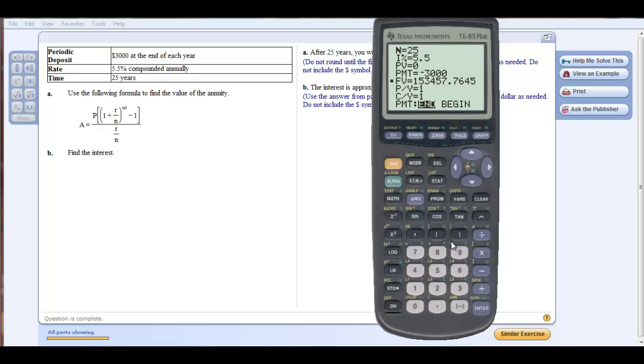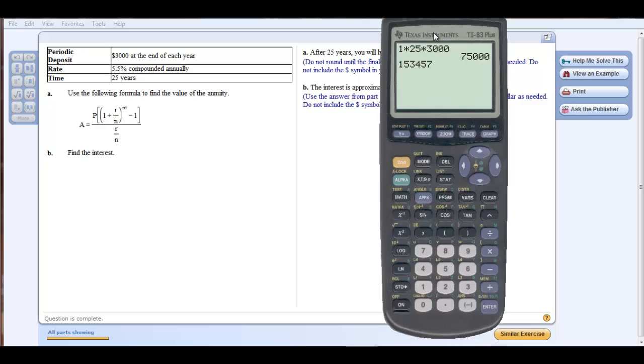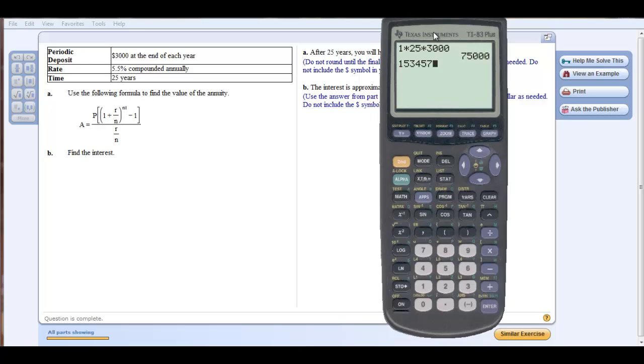The second part of this question says to find the interest. To do that, I'm going to click to my main screen, and I'm going to say, one time a year, for 25 years, I'm depositing $3,000. That means I've set aside $75,000 towards this annuity. What my annuity was worth was $153,457.